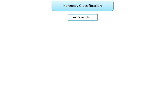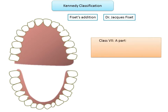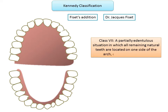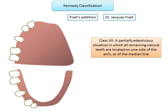Moving on to Physit's additions, given by Dr. Jacques Physit. Class 7 is a partially edentulous situation in which all remaining natural teeth are located on one side of the arch or of the median line. All teeth are missing on one side of the arch while the other side has a couple of edentulous spaces.